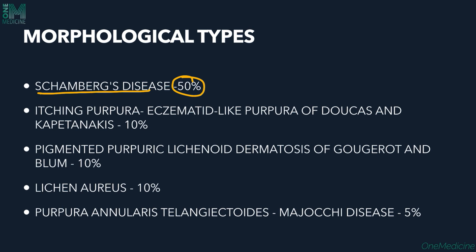Another type is itching purpura — eczematoid-like purpura of Doucas and Kapetanakis — seen in about 10% of cases. Although most PPDs are asymptomatic, itching is prominent here, giving it the name 'itching purpura.' It presents with eczema-like changes, and since eczema is associated with itching, the two are linked.